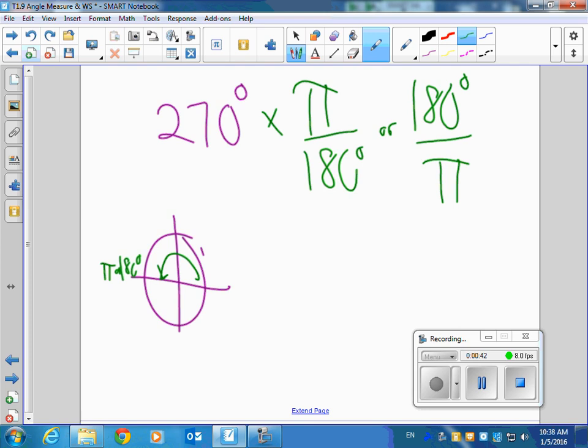Don't memorize this. Use logic. If you want degrees to cancel out, which do I want to do, A or B? A, right? Because I want the degrees to cancel out. So, conveniently, I put it first.